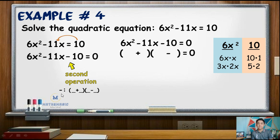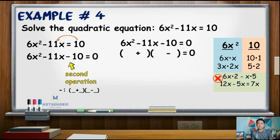Also, notice that the second operation is minus, meaning the binomial factors are expressed as a sum and a difference. Now, we need to look for pairs of factors in which the difference of the products is 11x, our second term. Taking 6x times x and 5 times 2: 6x times 2 gives 12x, minus x times 5 gives 5x — a difference of 7x, which is not equivalent to 11x, so it is an incorrect factor pair. Trying 3x times 5 minus 2x times 2: 3x times 5 is 15x, minus 2x times 2 is 4x, giving a difference of 11x. This means these factor pairs are correct.